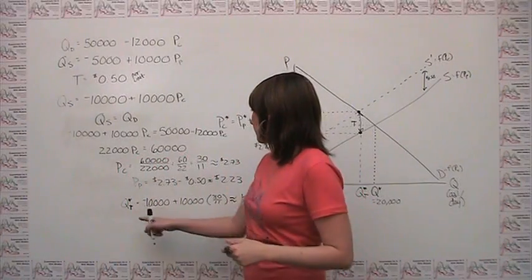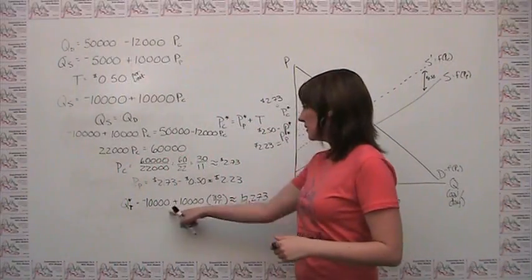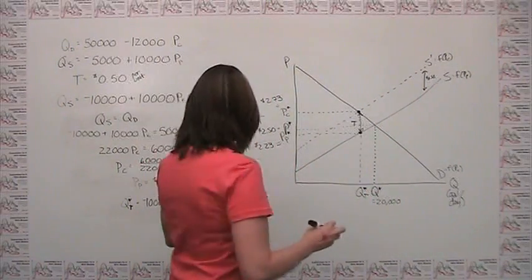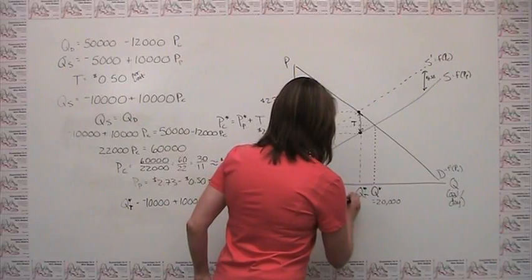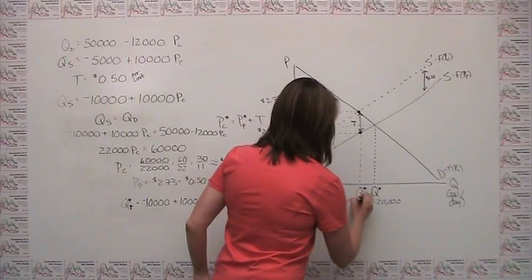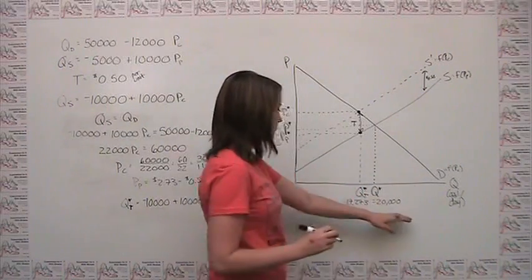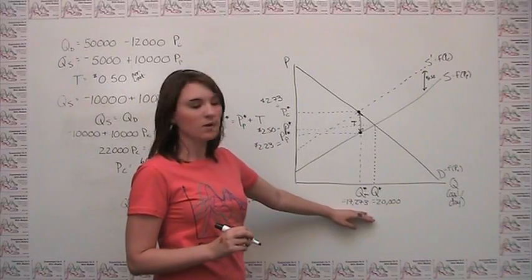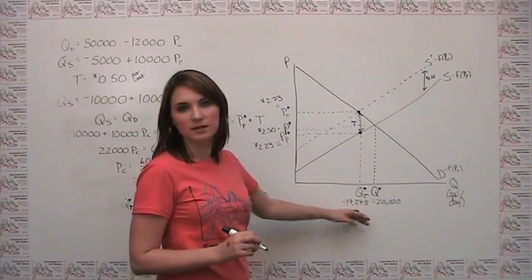The last thing that we want to label is the quantity with our tax, which is just this guy here. So we can say that this is our 17,273. So we notice that in fact the tax does reduce the quantity produced and consumed in this market.